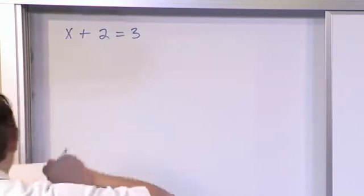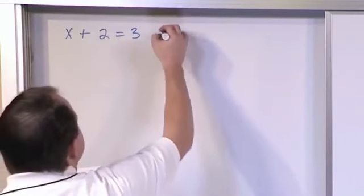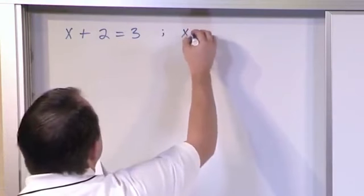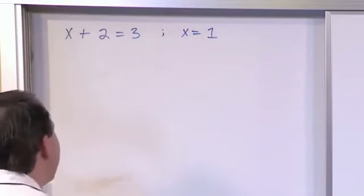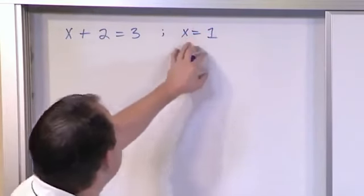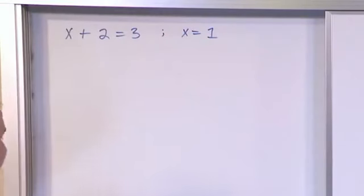Now, we know this is an equation because it has an equal sign. Let me go ahead and put a semicolon here and I'm going to tell you that x is equal to 1. And I'm going to ask you, is this a valid solution for this equation?